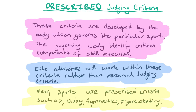Prescribed judging criteria are developed by the governing body of a particular sport. The governing body identifies critical components of skill execution — for example, Gymnastics Australia will decide what criteria to use for national gymnastics events, and that criteria is used for judging. Elite athletes work within these prescribed criteria rather than personal judging criteria, developing their performance around what the governing body expects. Many sports use prescribed criteria, such as diving, gymnastics, and figure skating.